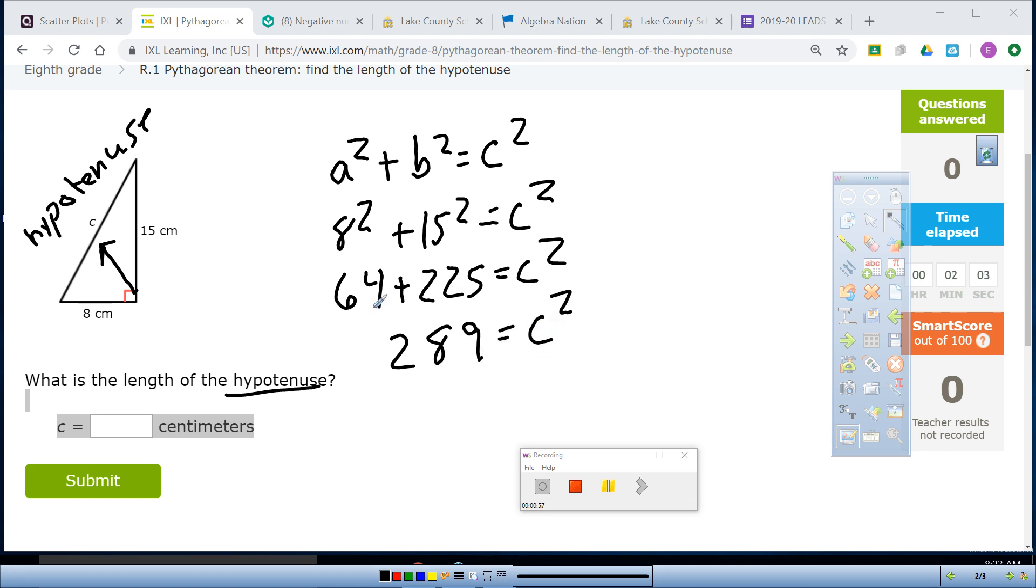When I look at that, I say, well, that answer can't be 289. That's too long. So the last step is always to take the square root. So when you take the square root of both sides, the square root of 289 is 17.